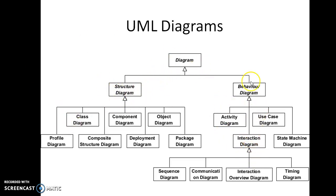We are going to see each diagram one by one, but first understand what is the Structural Diagram and what is the Behavioral Diagram. The Structural Diagram shows the static structure of the system and its parts at different abstraction and implementation levels. They show how classes and components are related to each other, but they don't show how they will interact or how they will change their state.